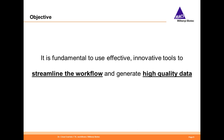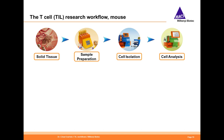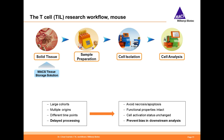Therefore, it is fundamental to use effective, innovative tools to streamline the workflow and generate high-quality data. To this end, we have developed solutions for all the steps of mainstream cancer research workflows, combining them to decrease the time required and increase the quality of the data generated. This starts with collecting and storing the tumor tissue. Sometimes, when working with large cohorts, or the material has to be collected from multiple origins or at different time points, the tissue cannot be directly processed. During this storage period, necrosis and apoptosis must be avoided, and the functional properties or activation status of cells must remain unchanged to prevent causing bias in downstream analysis.